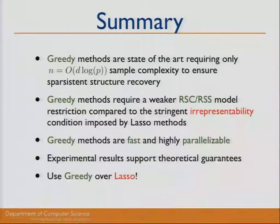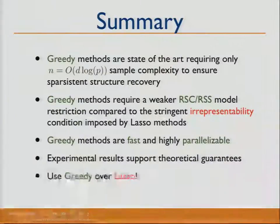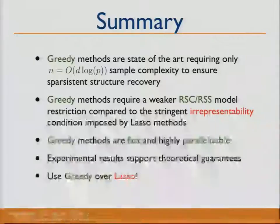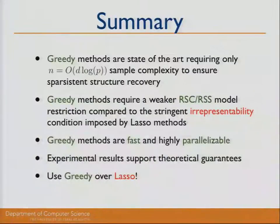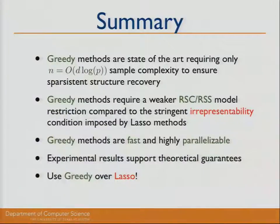Q: Is the interleaving between forward and backward stages necessary? Could you do all forward steps then all backward steps? A: The analysis follows by the method of doing adaptive forward and backward steps. It's definitely not true that doing all forward steps gives you all the edges you need without backward steps — even when only learning the local neighborhood structure. You need to be adaptive to ensure you return the full structure.